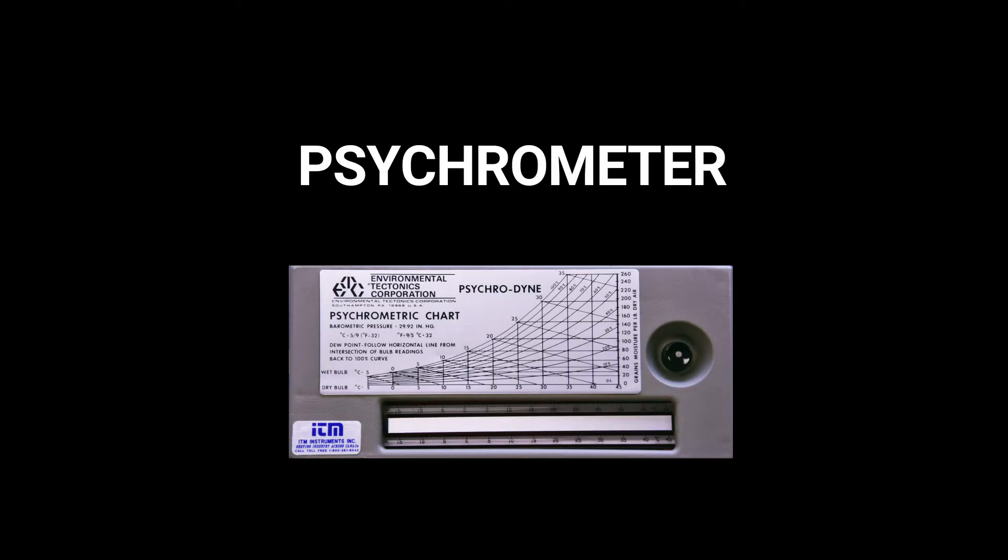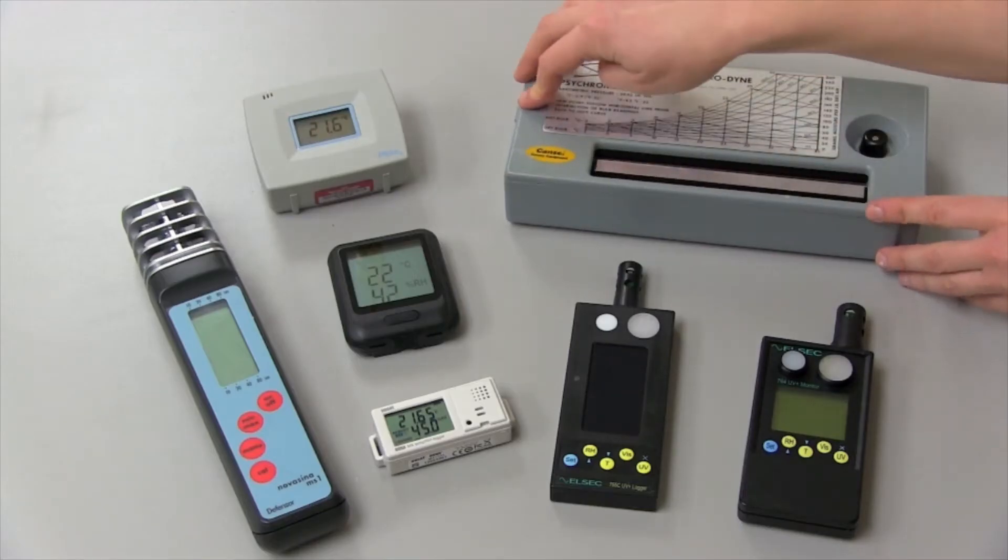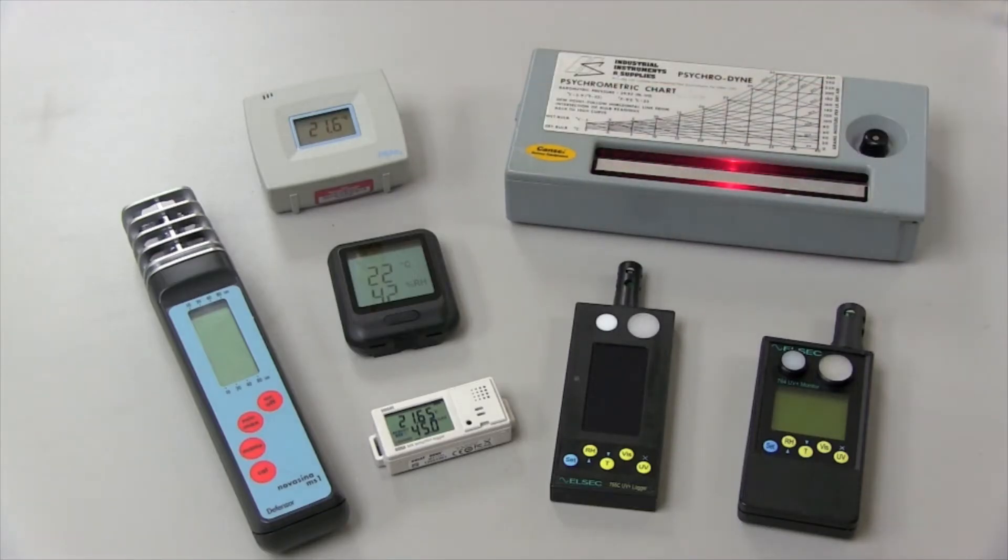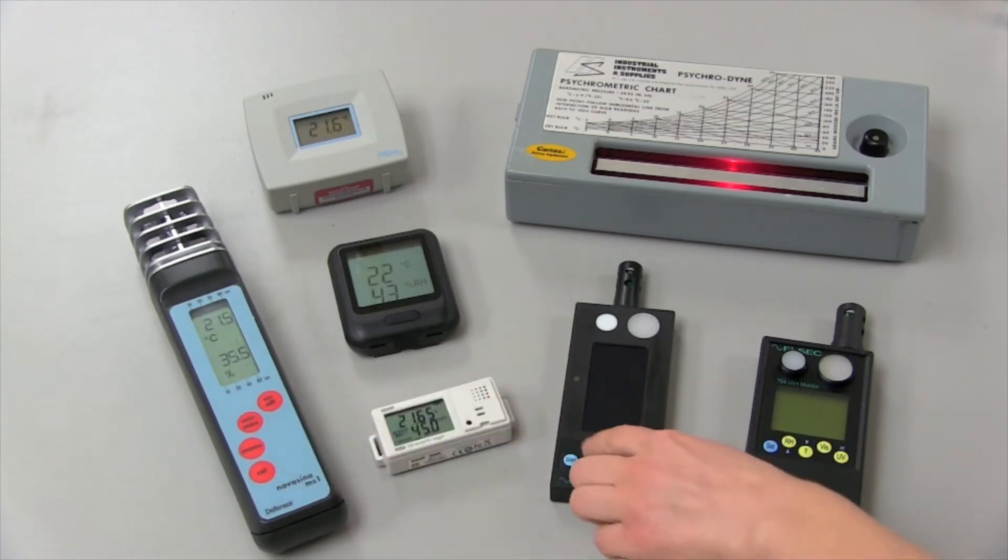A psychrometer is an instrument that provides a reliable measurement of temperature and relative humidity. Psychrometers are used to check if other devices such as data loggers are reading accurately.